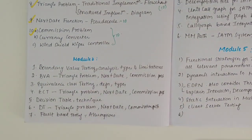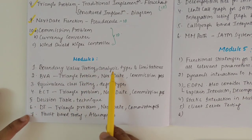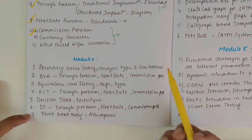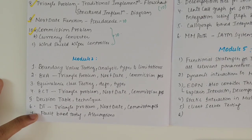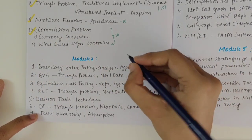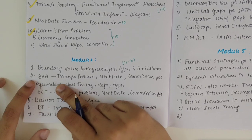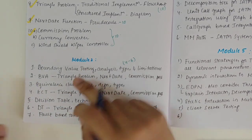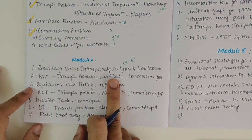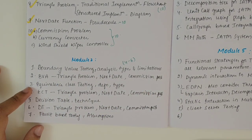Module two topics: there are only three or four main topics, and for each we have to perform testing for problems. Firstly, we have boundary value testing — analysis, types, and limitations. This could be a theoretical question of four or six marks. Next we have BVA boundary value testing applied to the triangle problem, next date problem, or commission problem. This is a must.